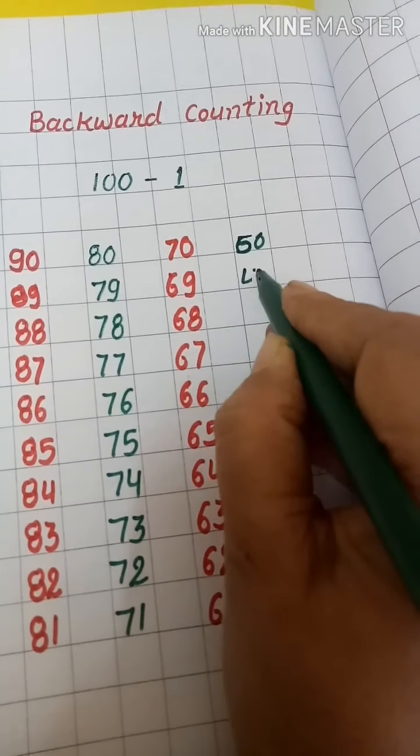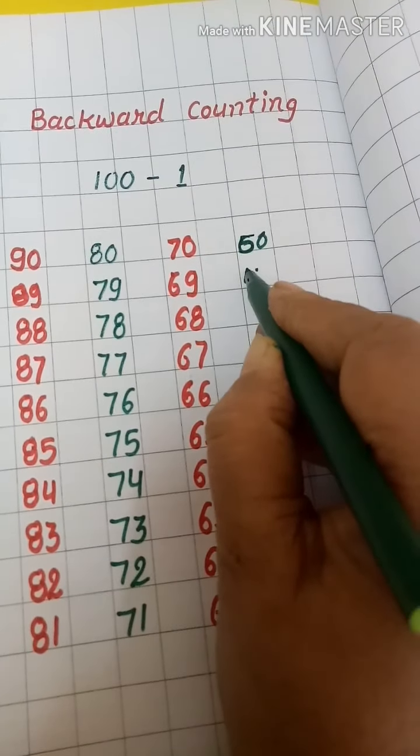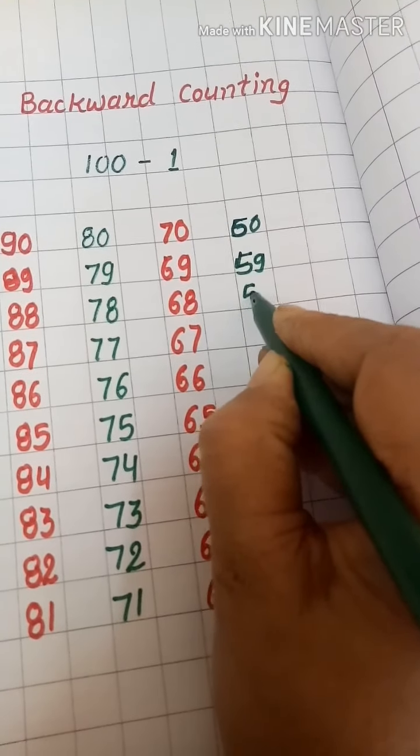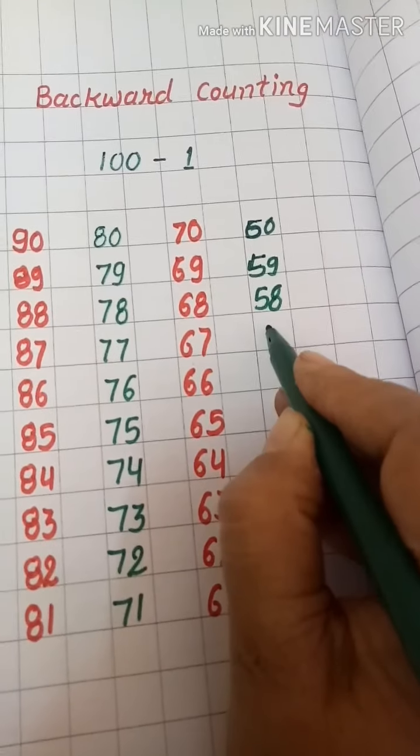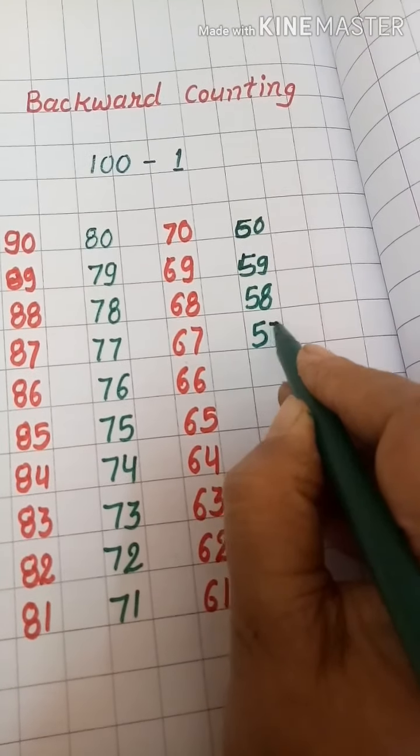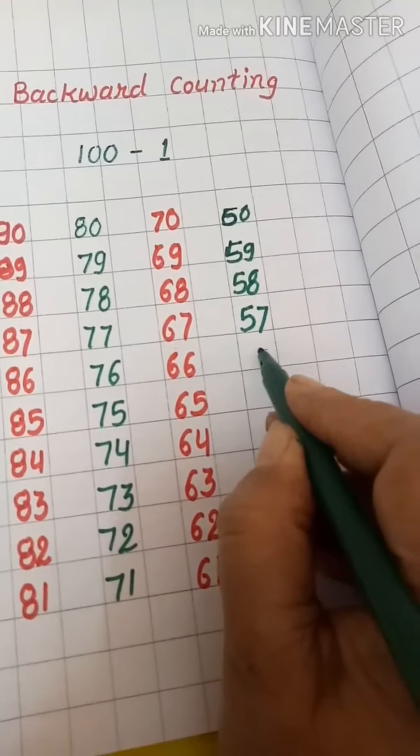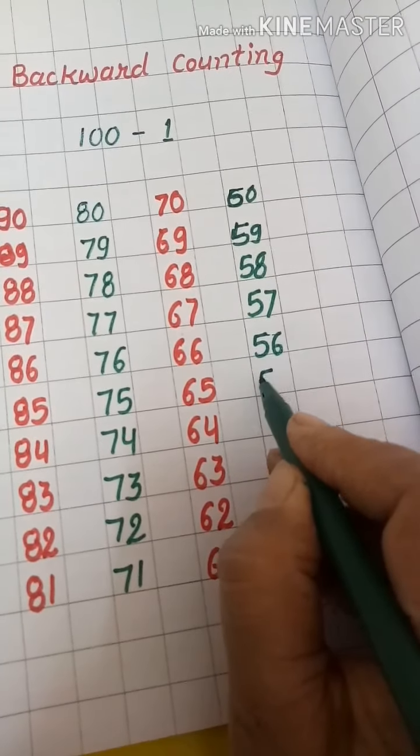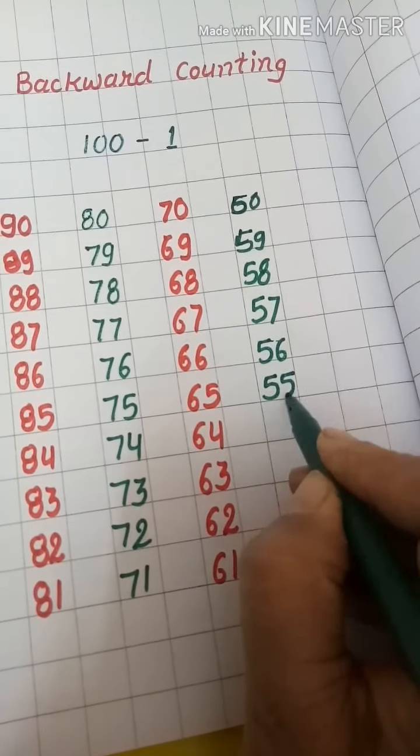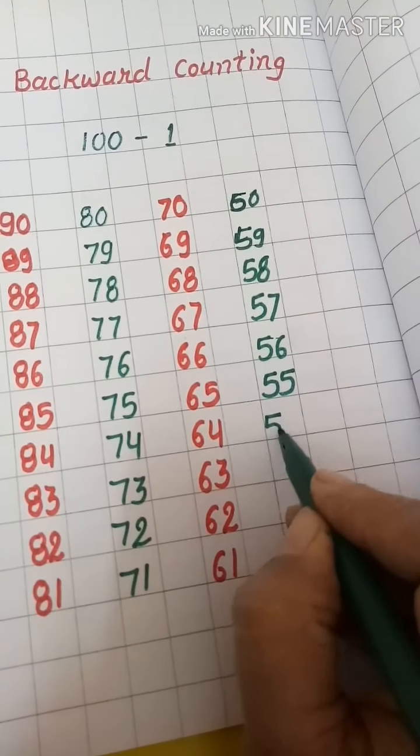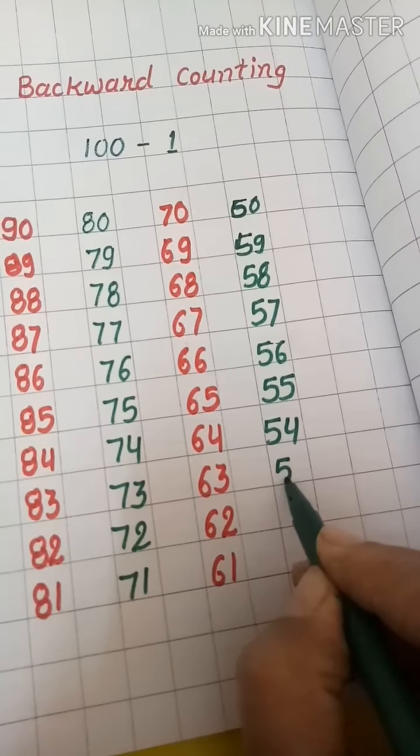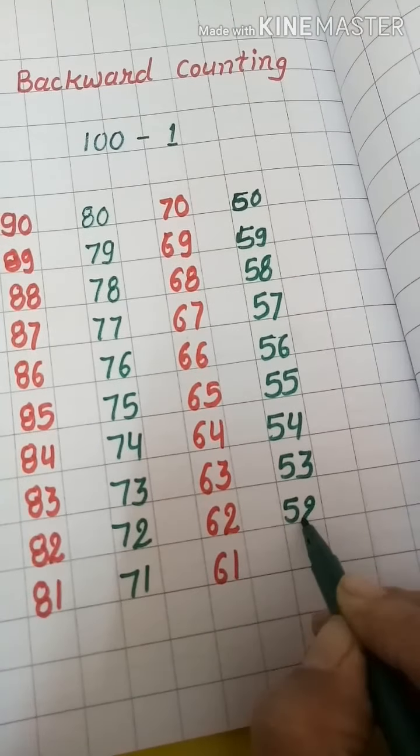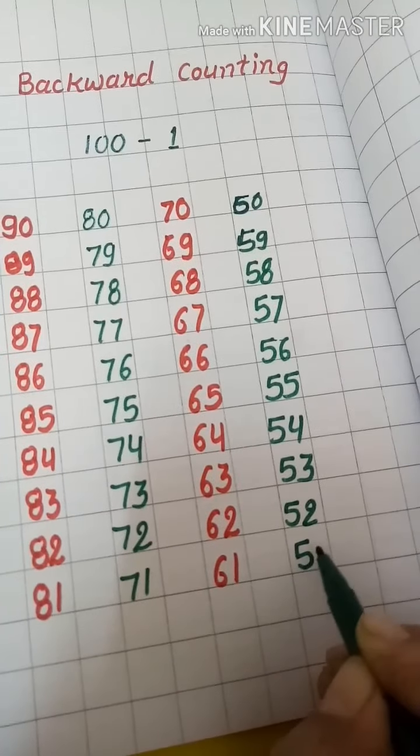Fifty-nine, fifty-eight, fifty-seven, fifty-six, fifty-five, fifty-four, fifty-three, fifty-two, fifty-one.